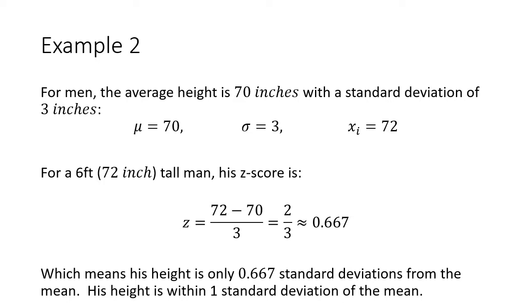To find his z-score, we plug those in. Always do the subtraction first. You've got to do order of operations. If you just type it into your calculator the way it's written, you're going to get many wrong answers, and that is actually a huge issue with this section. You have to find that deviation from the mean. If he's 72 inches tall, that means he's 2 inches taller than average, divided by the standard deviation, which is 3, and so his z-score is two-thirds, or 0.667. That means his height is only 0.667 standard deviations from the mean. His height is even within one standard deviation of the mean, which means he's pretty close to average. He is taller than average, but not that much taller.